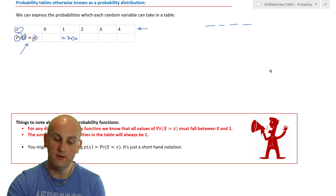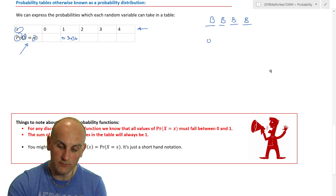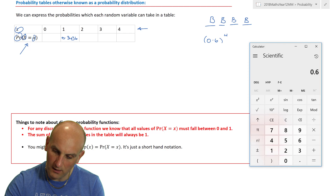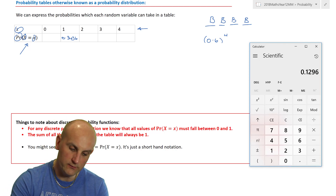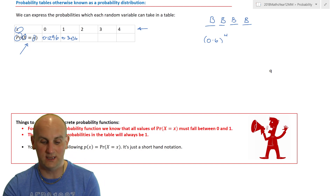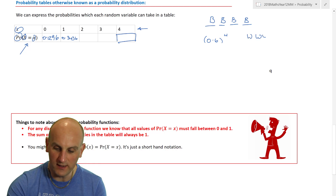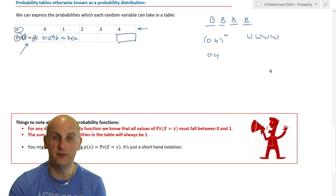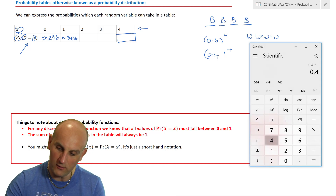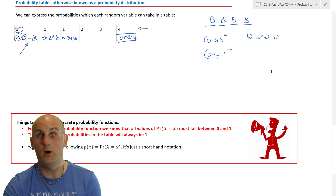To find P(X = 0), i.e. no white balls, it would be black-black-black-black, so that's 0.6 to the power of 4, which gives 0.1296. To find P(X = 4), all four white, that's 0.4 to the power of 4, which gives 0.0256. I'll leave the probabilities for two and three white balls as an exercise, but here's the question: what do all those values in the table add up to?